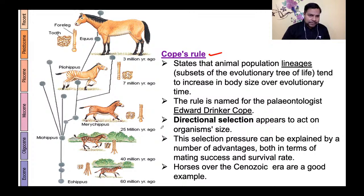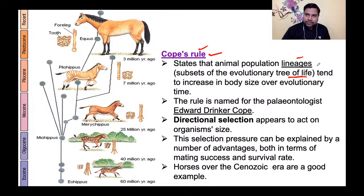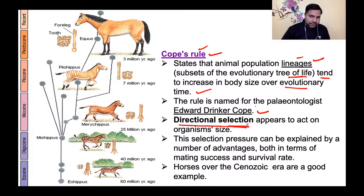Next is Cope's rule। It states that animal population lineages — subsets of the evolutionary tree of life — tend to increase in body size over evolutionary time। The rule is named for paleontologist Edward Drinker Cope। इसमें directional selection का concept आता है जो ecology और evolution में पढ़ा है।